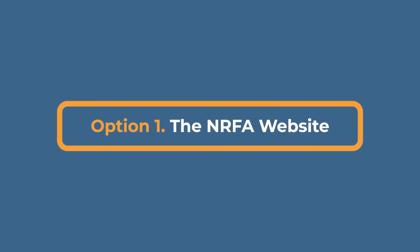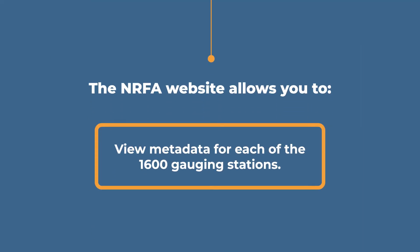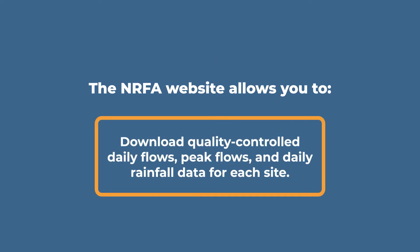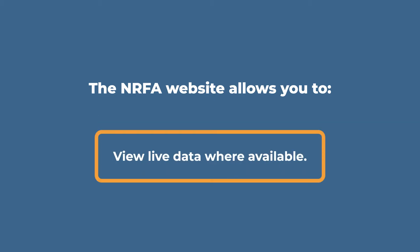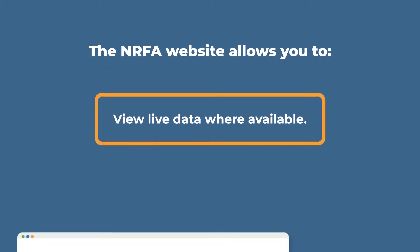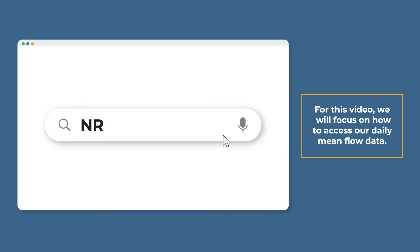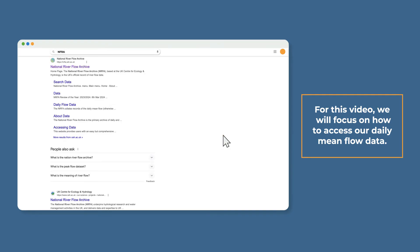Option one. The NRFA website allows you to view metadata for each of the 1600 gauging stations, download quality controlled daily flows, peak flows and daily rainfall data for each site, and view live data where available. For this video, we will focus on how to access our daily mean flow data.